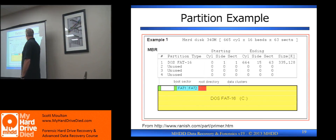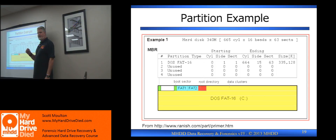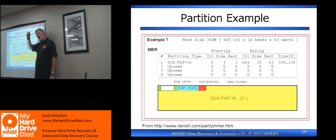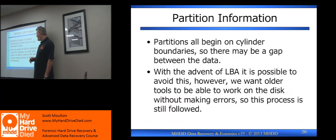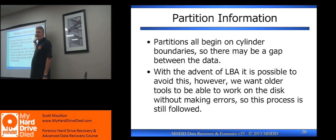In the olden days we used cylinders, heads, and sectors. LBA blocks are a calculation of cylinders, heads, and sectors. We used to actually specify: I have 17 heads, 65 sectors in this ring, and a cylinder. We could have completely abandoned this when we went to LBA in the mid-90s and gotten rid of all this legacy stuff.